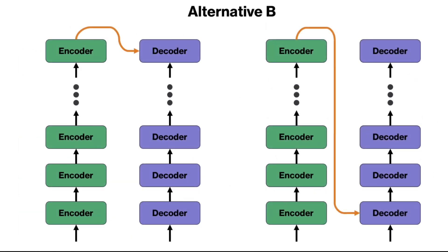Now moving to alternative B. We have established that we must use the final output of the encoder. The question is: why should each decoder layer receive that representation? What if we only connect the final encoder output to the first or last decoder, as shown here? This is alternative B.